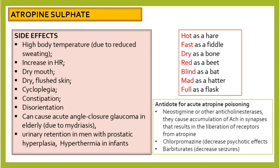In cases of acute atropine poisoning — for example, if a patient ingested belladonna or Jimsonweed — the antidote is neostigmine or other anticholinesterases. These drugs cause accumulation of acetylcholine in the synaptic cleft, resulting in displacement of atropine from the receptor, because the inhibition is competitive.